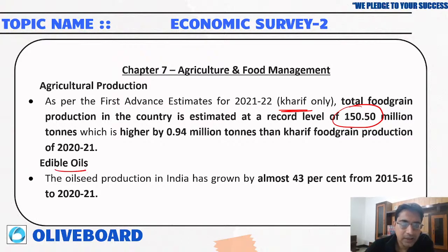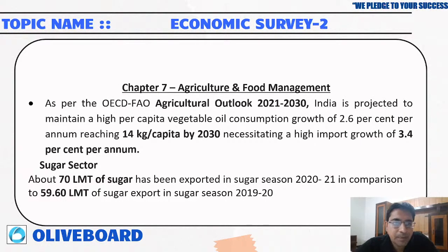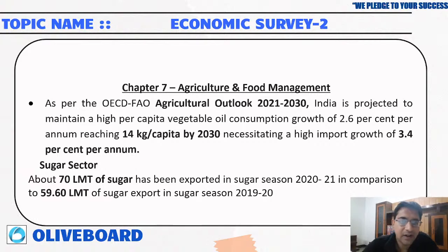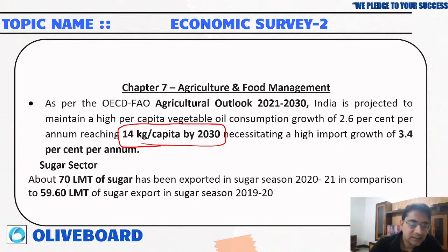Regarding edible oils, oilseed production has grown by almost 43 percent from 2015 to 2020. As per the OECD-FAO Agriculture Outlook report for 2021-2030, India is projected to maintain higher per capita vegetable oil consumption, reaching 14 kg per capita by 2030. In the sugar sector, 70 lakh metric tons of sugar were exported in the sugar season compared to 59 lakh tons previously.